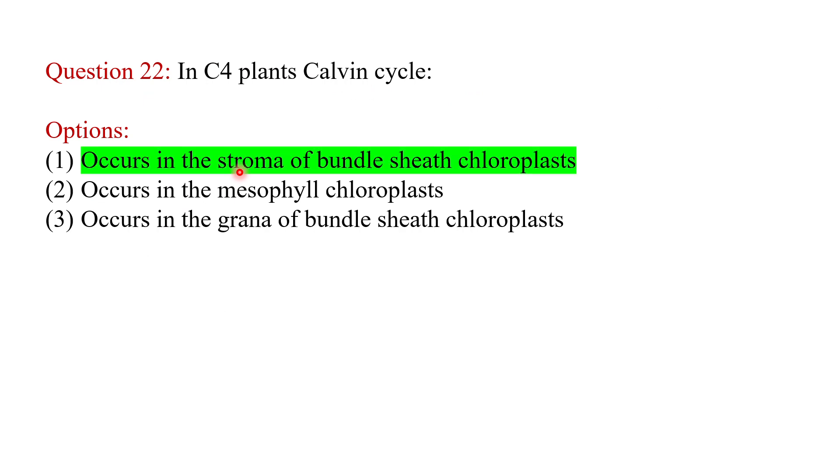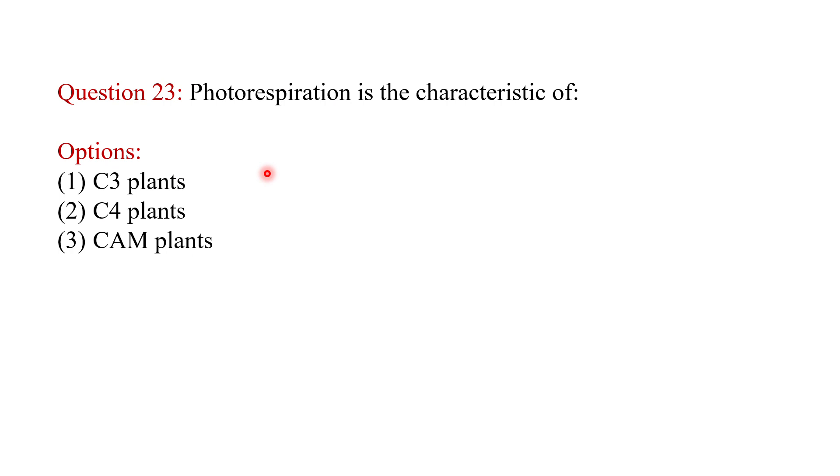Ribulose diphosphate carboxylase oxygenase is located in what? The answer is chloroplast. In C4 plants, Calvin cycle occurs in the stroma of bundle sheath chloroplast. Photorespiration is the characteristic of C3 plants.